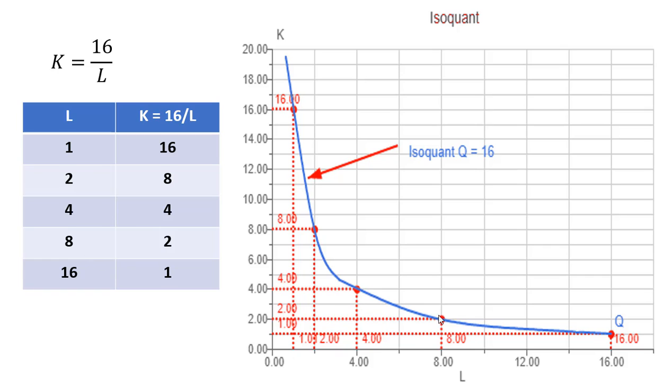L is 8, K is 2, another one. And L is 16, K is 1, another point. Connecting the dots here, this blue curved line represents an isoquant showing all combinations of labor and capital that produce 16 units of output. I hope you found this video helpful.